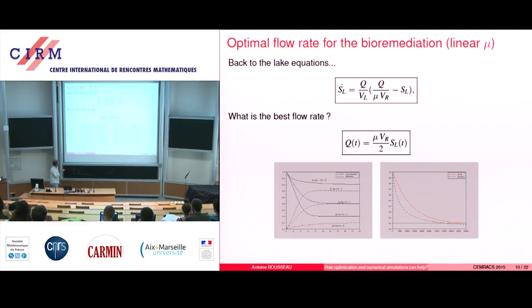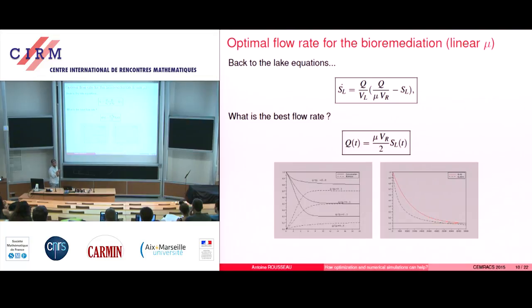A few simulations just to show that here you have one at the beginning as SL. You have your target, which is divided by 10. The red curve is given by the best constant Q — that means you give the operator a constant value, and he can leave the room, because the flow rate does not depend on T. That gives a good curve, but the best thing to do is to have an adaptive time evolution of Q, and this gives a much faster depollution of the lake.